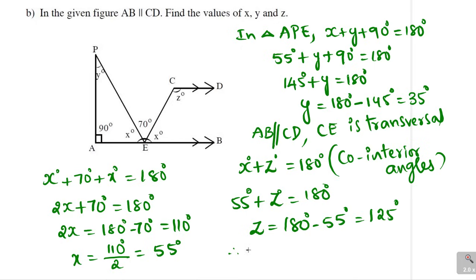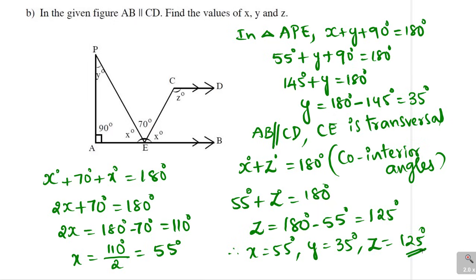Therefore X equals 55 degrees, Y equals 35 degrees, and Z equals 125 degrees. Those are the values of X, Y, and Z. With that, the solutions of the question paper in Formative Assessment 2 of 9th class in 2022-23 are completed. Hope you understand each and every problem. If you like my explanation, please subscribe to my channel. Thank you.